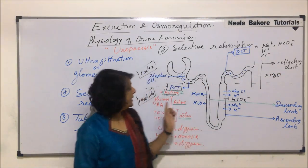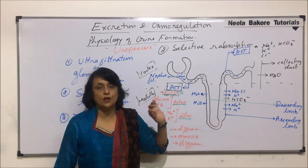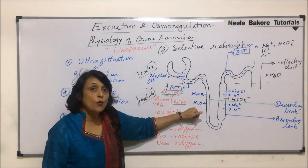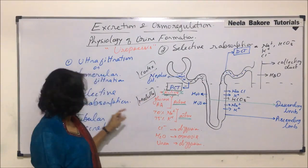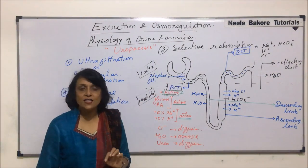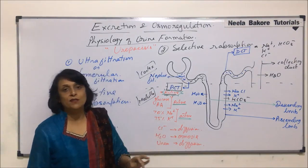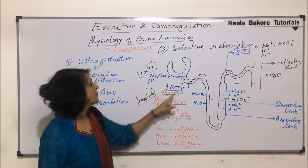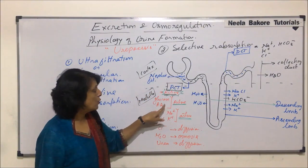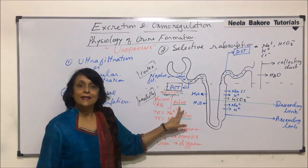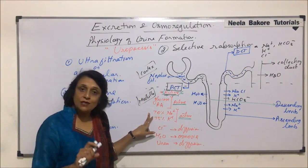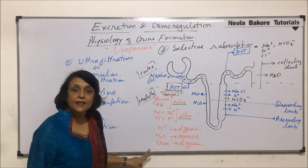In this entire nephron, in its various parts, the things which got filtered due to ultrafiltration — out of which the useful things get reabsorbed — that is why we talk of selective reabsorption. The filtrate by ultrafiltration contains glucose, amino acids, chloride ions, vitamin C, and important ions like sodium and potassium. Passing through PCT, maximum active absorption takes place: glucose and amino acids 100% actively, sodium and potassium about 70–75% actively.